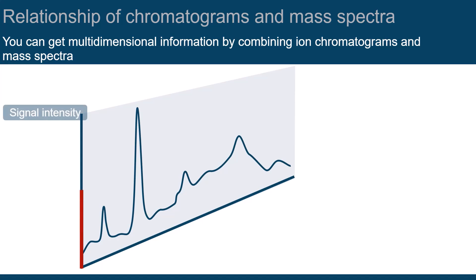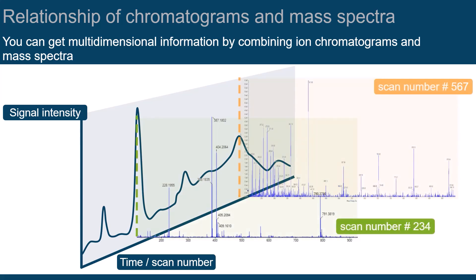The chromatogram shows you how the signal intensity changes depending on the time or scan number. The mass spectrum shows you which ions were detected at certain points in time, and how high the intensity of individual analytes is.